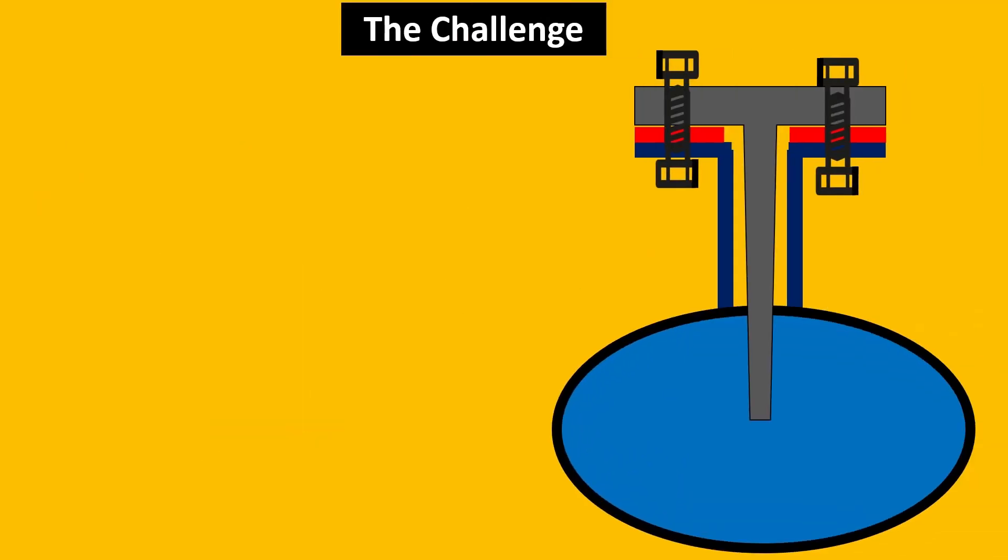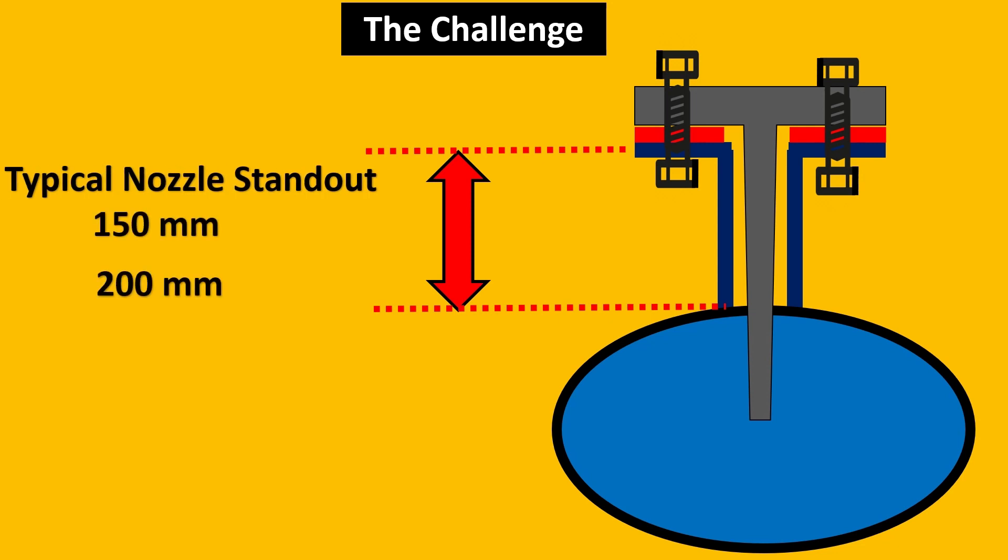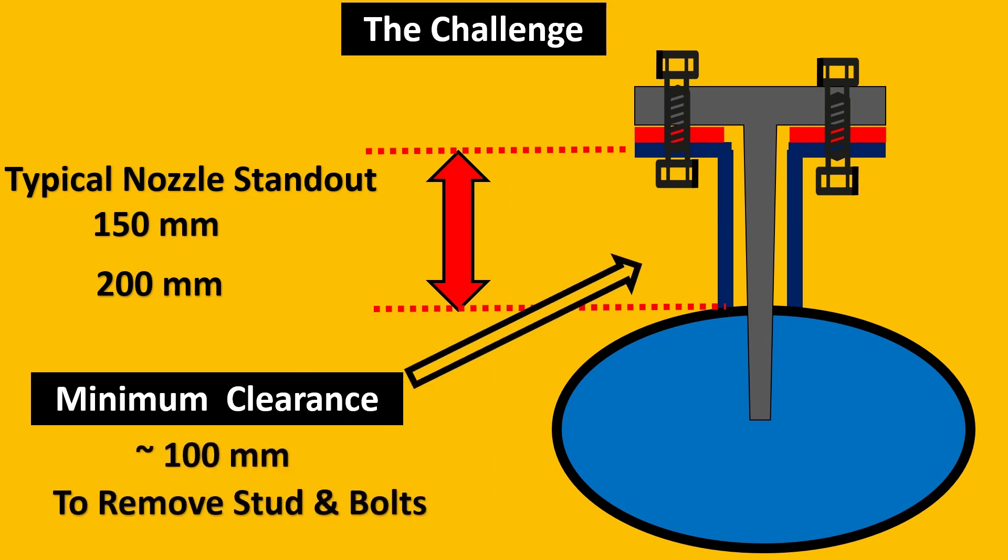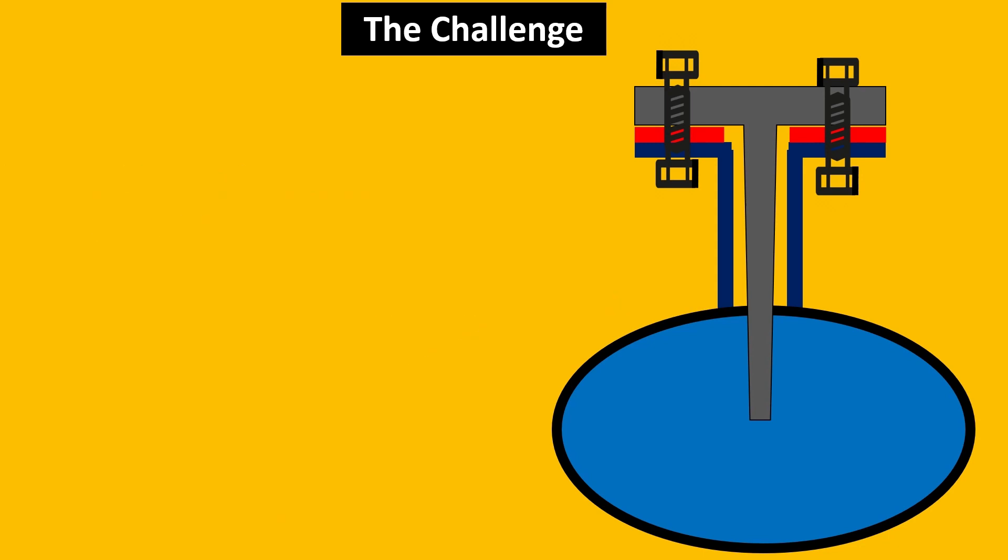So imagine the challenge here is that the normal standout which is typically around 150 mm or 200 mm in usual projects. And in these standouts we need a minimum clearance for the thermowells to be removed properly, from removing the bolts, studs, etc. So this clearance space should be around 100 mm. But if you see even if it is 150 mm we are getting more than 100 mm clearance space. So then what is the challenge here?